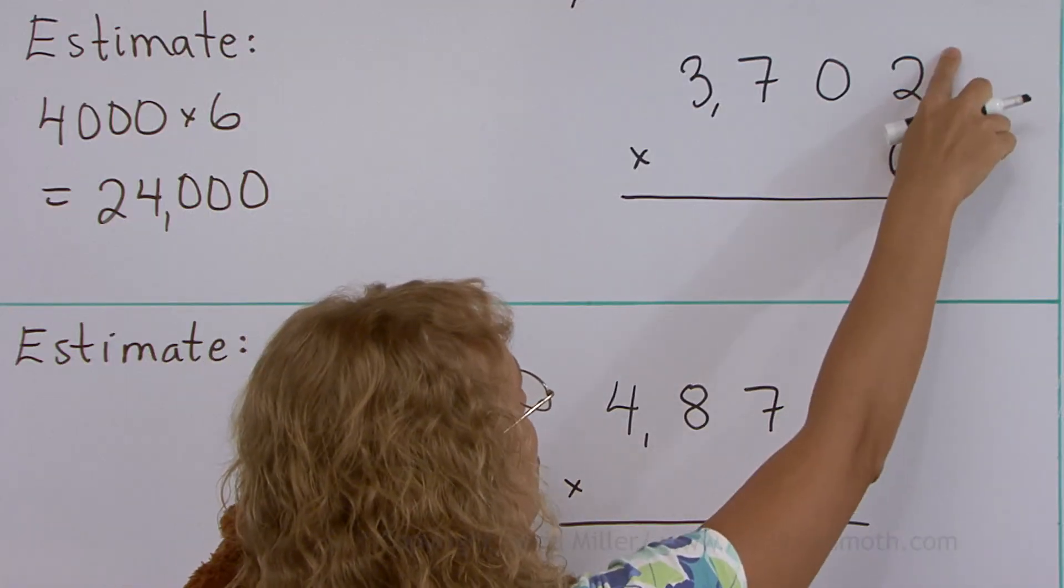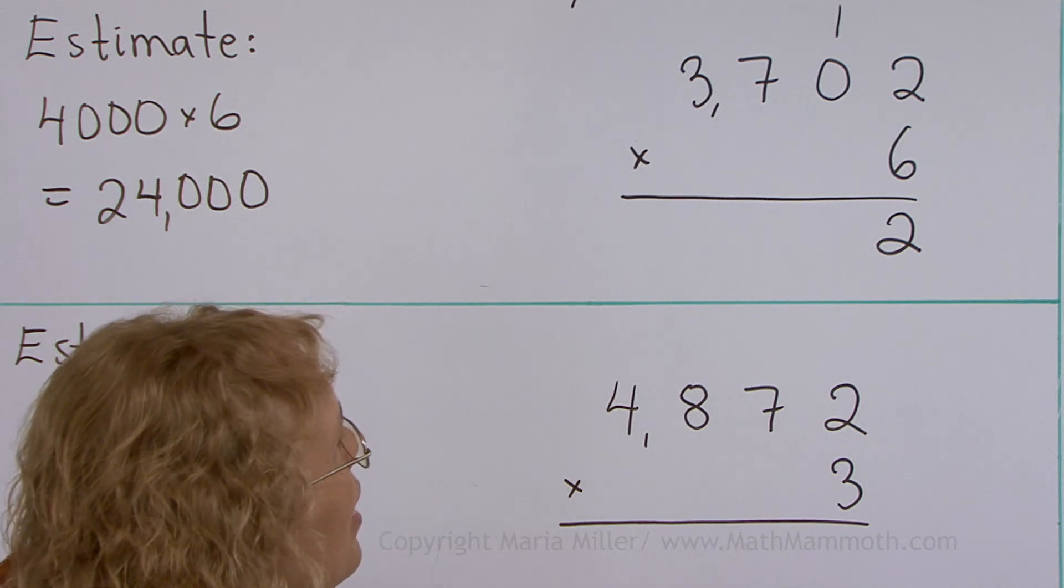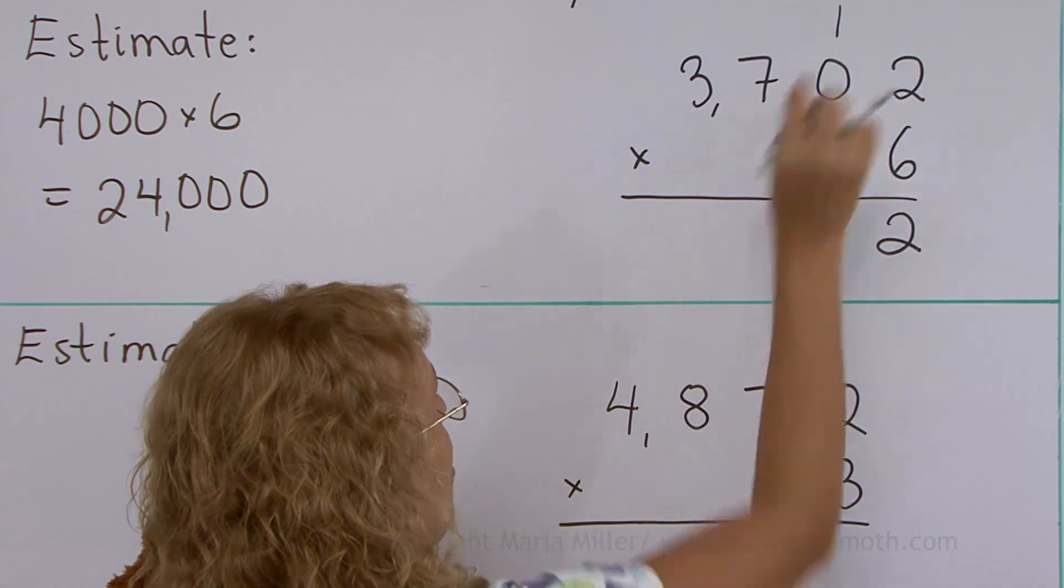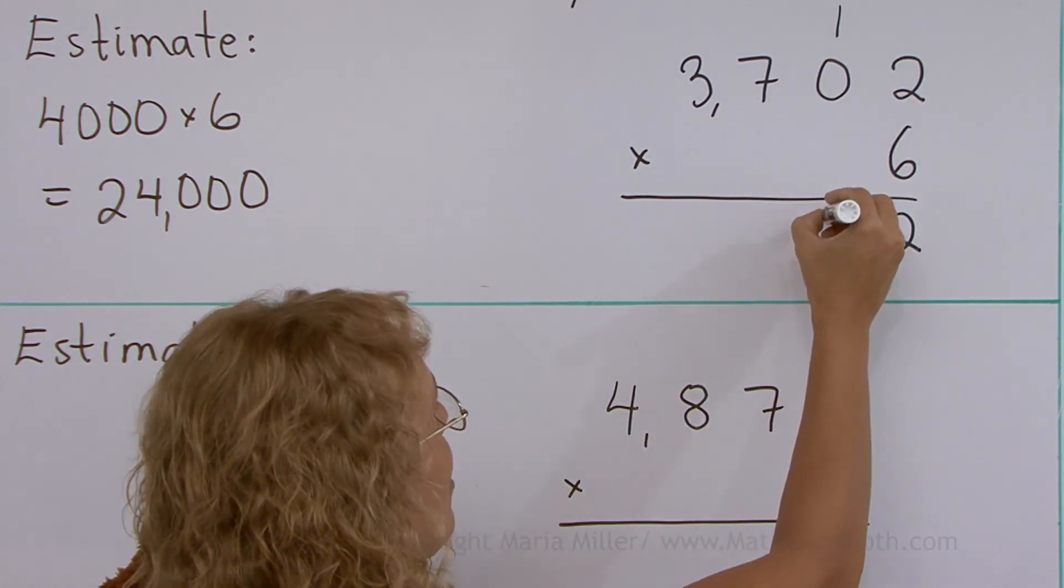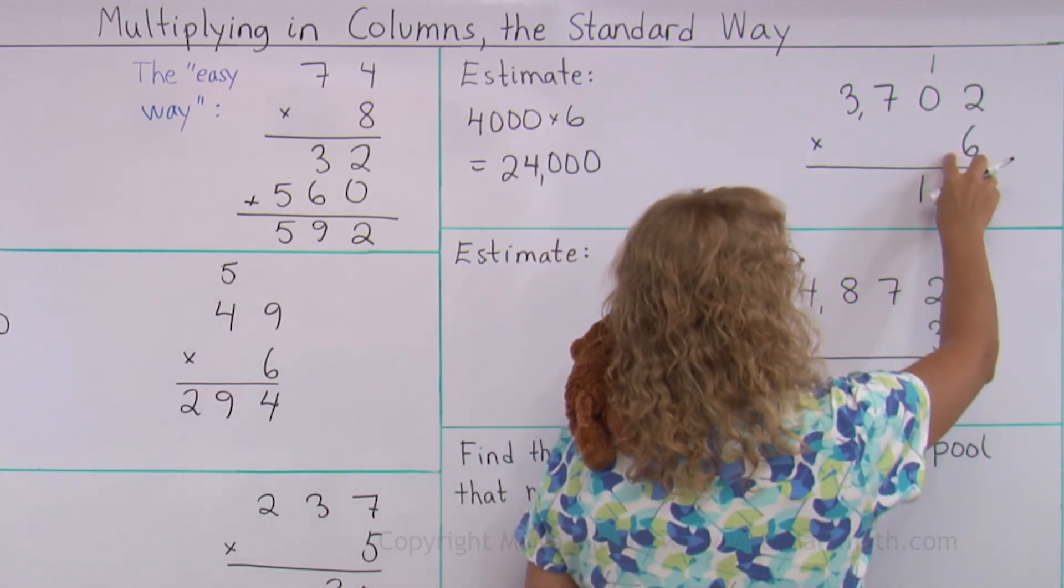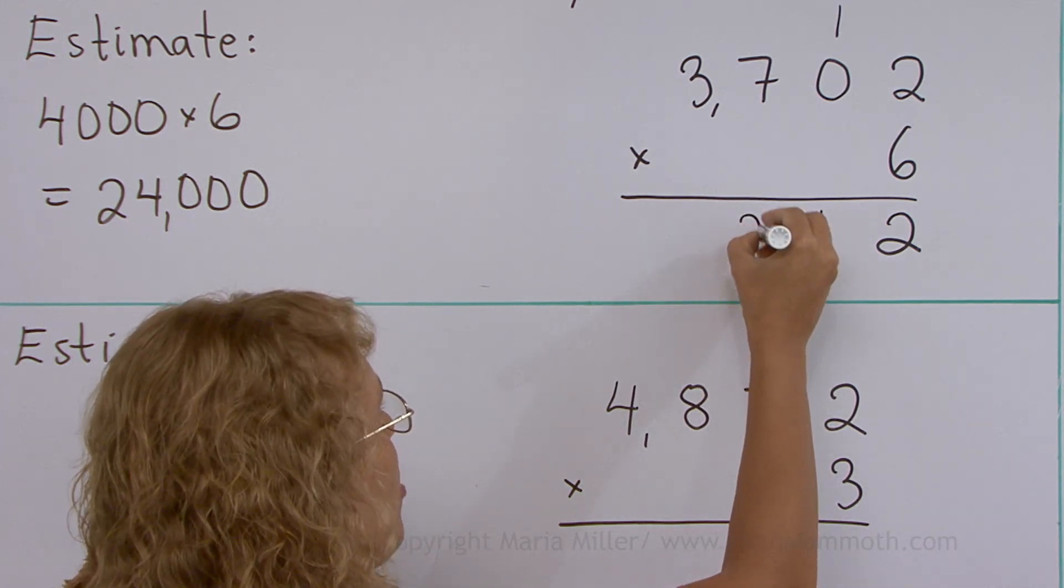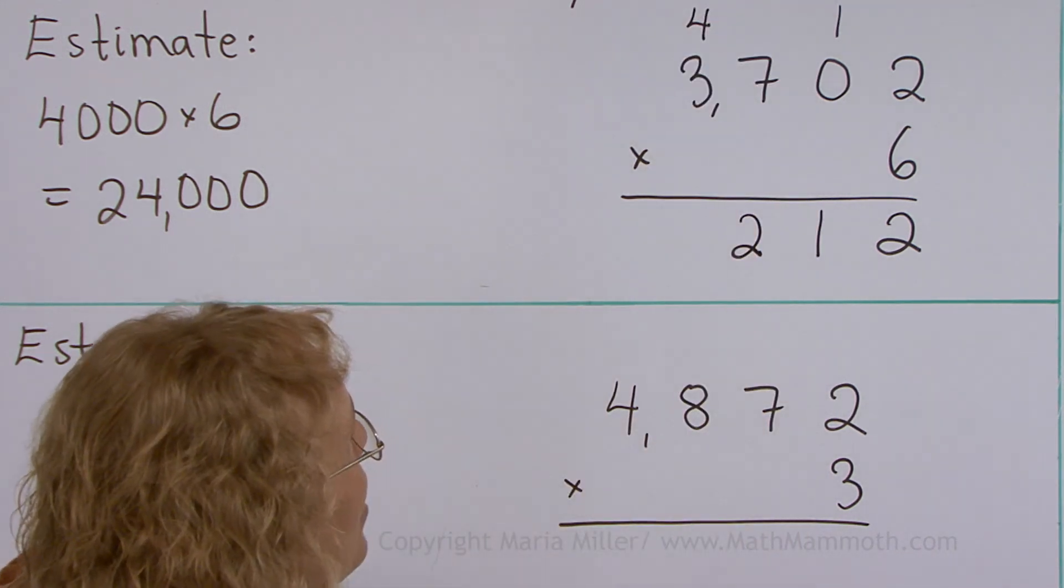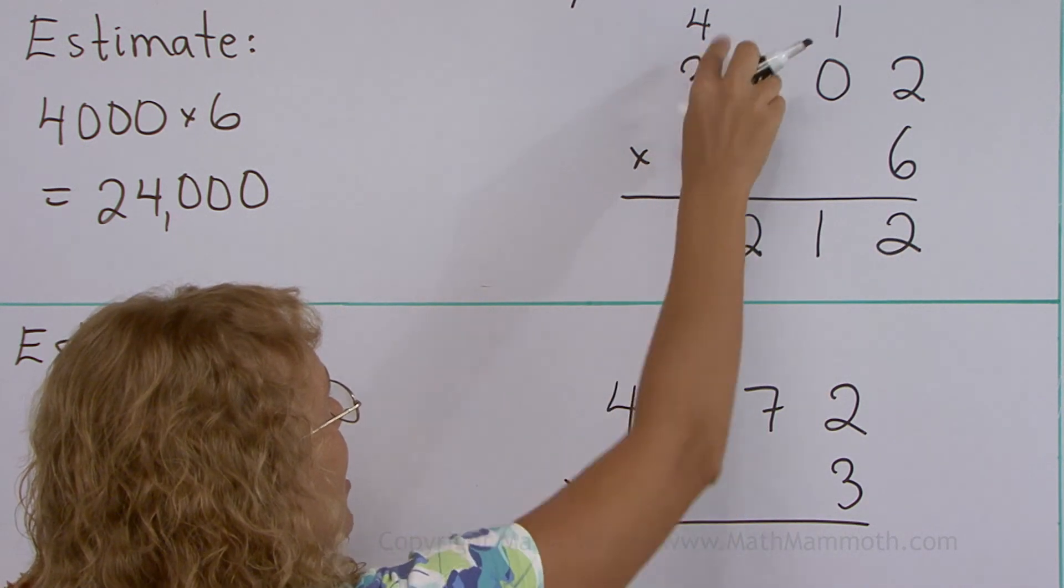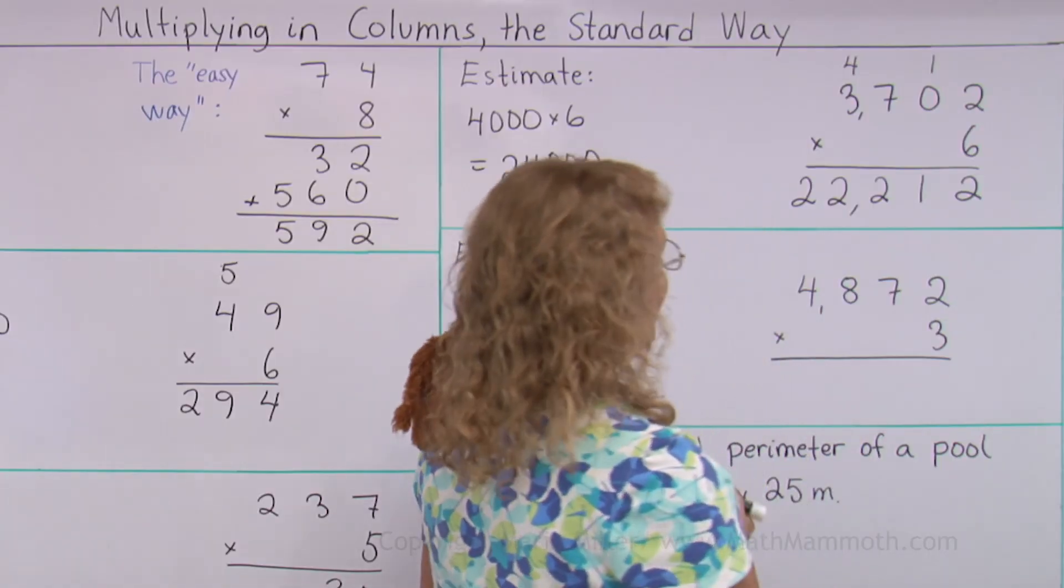Then over here. 6 times 2 is 12. But the 10 is regrouped. Then in the tens, 6 times 0, plus 1. So there's 0 plus 1, that is just 1. So now there is no regrouping, there's just 1. So then I just go to the hundreds. 6 times 7, 42. 2 here, 4 is regrouped. And lastly, 6 times 3, plus 4. So I get 18 plus 4, 22. 22,212.